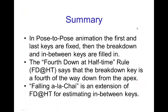In summary, for pose-to-pose animation, you decide on the first and last keys, fix those, and then start filling in keys in between, starting with the breakdown and then any further in-betweens. The fourth down at half time rule says that the breakdown key halfway in time from the apex to the last key has a spacing that is a fourth of the way down from the apex. Falling à la Chai extends this to give you further in-between keys besides the breakdown. Hopefully between the odd rule and fourth down at half time, you'll be able to create believable slowing out for falling motion. Take care. Bye.